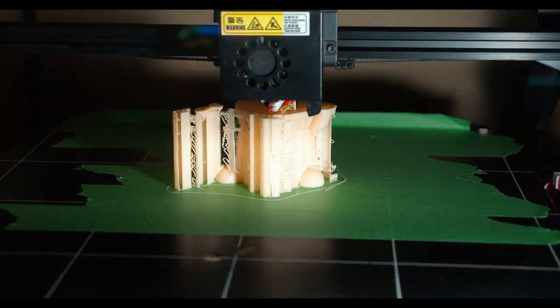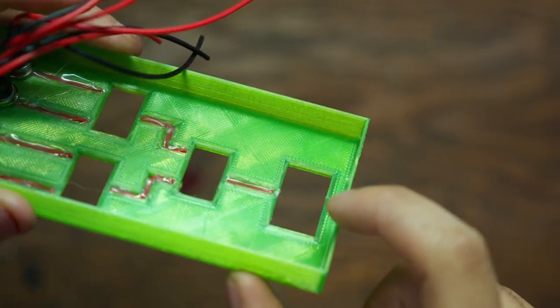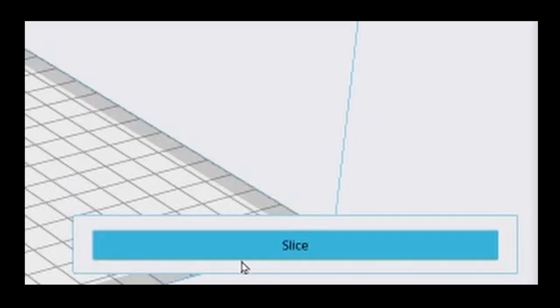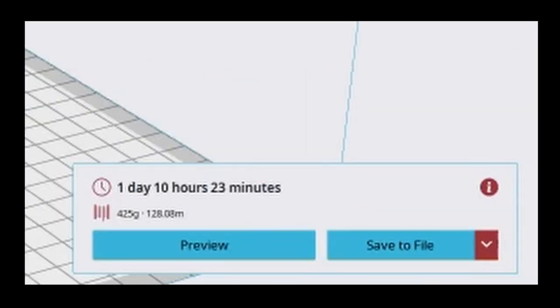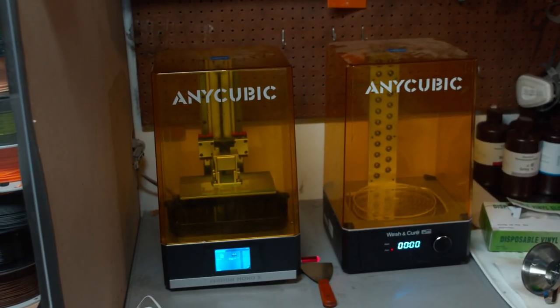It melts plastic as it's moving around, and lays it down layer by layer. FDM printers can get nice prints, but they are limited. You can only get so thin before it takes weeks to print something basic. To fix that, we're going to use a totally different method of printing, called resin printing.